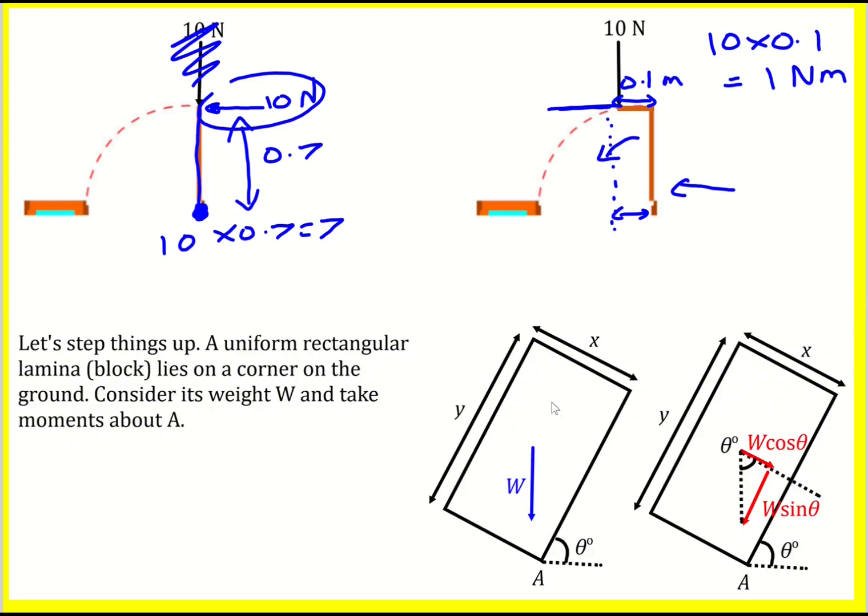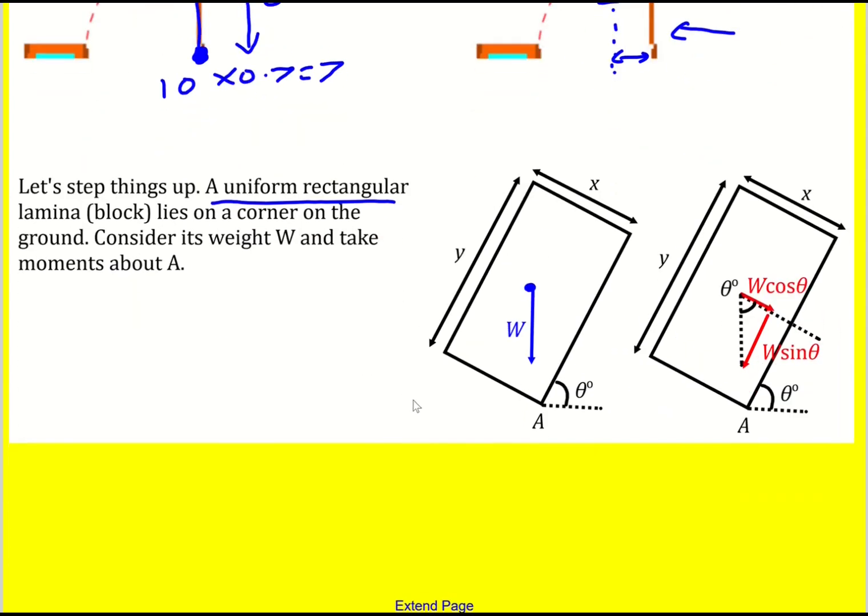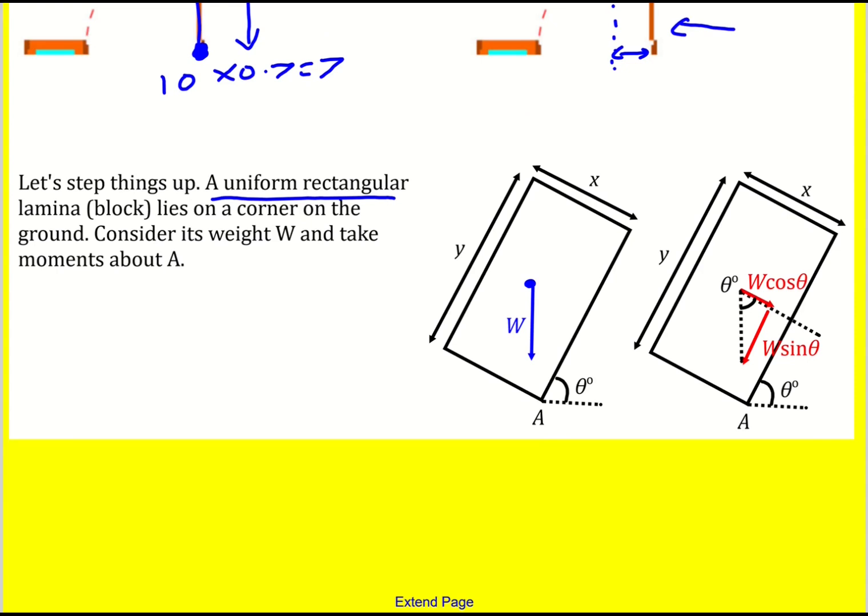The next step is what happens when you have not just a rod, but a rectangular lamina, which has a weight acting from the very middle. I'm only going to look at a uniform rectangular lamina here. How does this affect things? Well, there's going to be a component of the weight acting perpendicular to this edge, and it's going to be W. If that is theta, this will also be theta. It's going to be W cos theta.